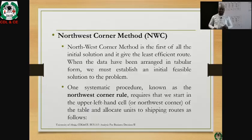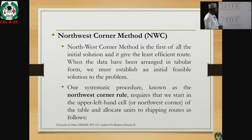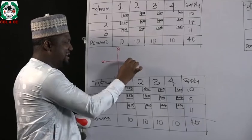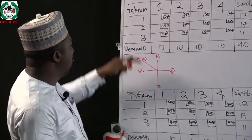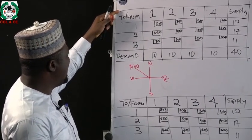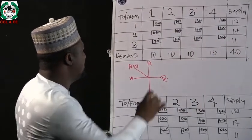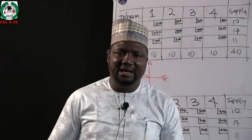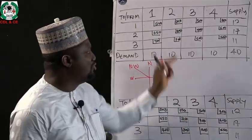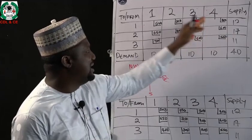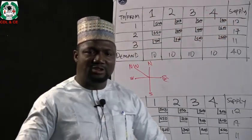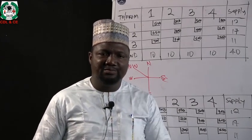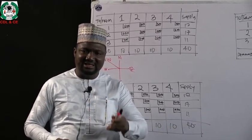Let's begin with the northwest corner rule. As the name stipulates, north-west refers to the top-left corner. Using the four cardinal points — north, south, west, and east — our north-west starts from the top-left cell, and that is where we begin the allocation. In the allocation process, we must ensure that we exhaust both rows and columns without violating the quantity constraints for both demand and supply. The algorithm for solving the northwest corner rule is highlighted on the board.